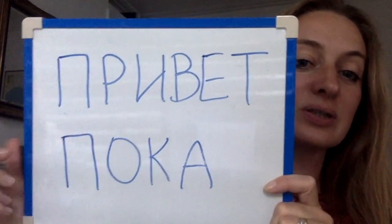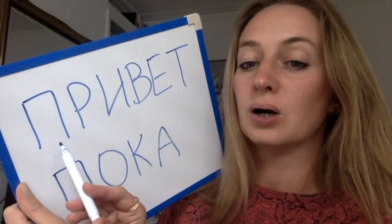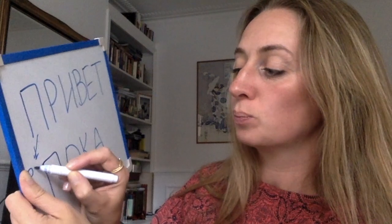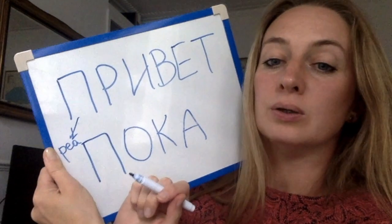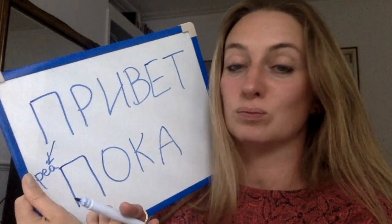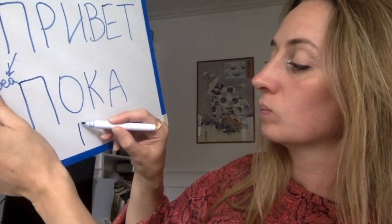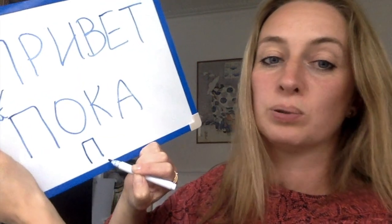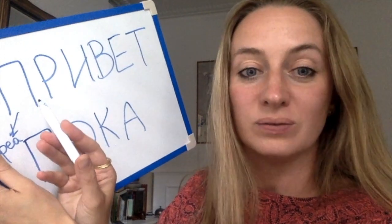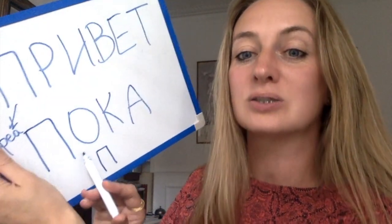Let's have a look at these letters. There are nine Russian letters. The first letter is П — like English P, the sound is the same but the symbol is different. The first letter of Привет is П, and the first letter of пока (bye) is also П.